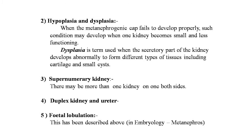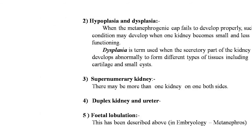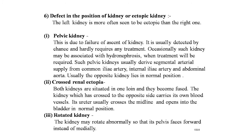The third congenital anomaly is the supernumeric kidney — there may be more than one on either or both sides. Next is the duplex kidney and ureter — there is a double kidney or double ureter. Fetal lobulation has been described above under embryology and the metanephros.